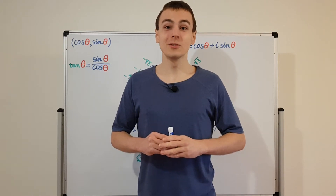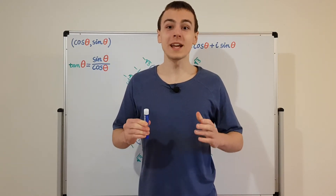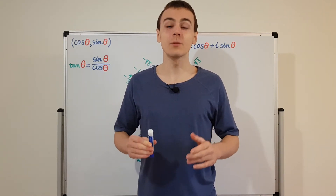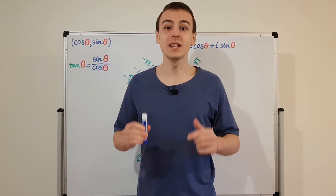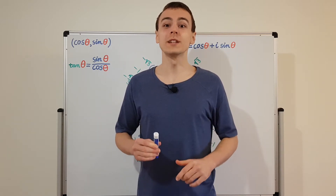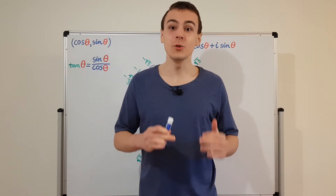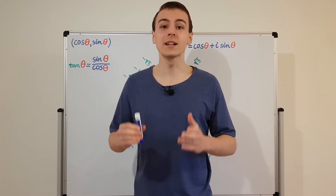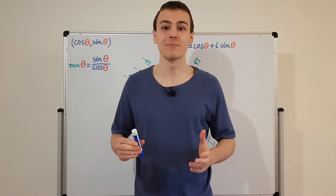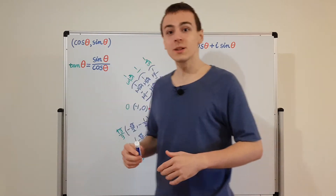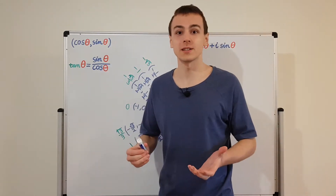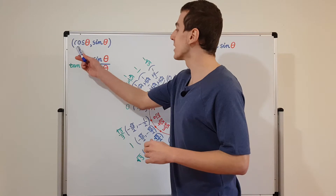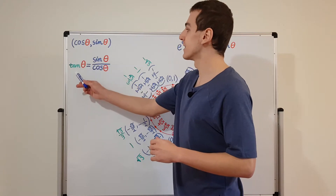The previous few videos in the quantum mechanics playlist have all been leading up to this video, where I will discuss the unit circle in the complex plane. We have talked about the trigonometric functions — those are sine, cosine, and tan.